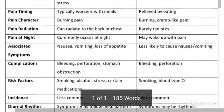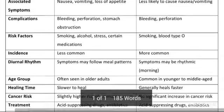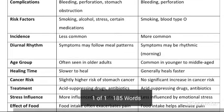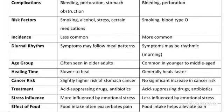Next difference hai complications. Gastric ulcer mein jo complications hoti hain: bleeding ho sakti hai, gastric lining ki perforation ho sakti hai, aur stomach ki obstruction ho sakti hai. Jo duodenal ulcer hai, us mein bleeding ho sakti hai and perforation — duodenum mein bleeding ho sakti hai aur duodenum ki jo lining hai us ki perforation ho sakti hai.